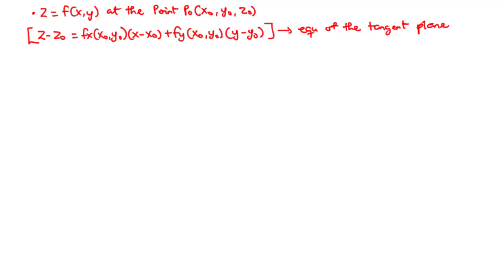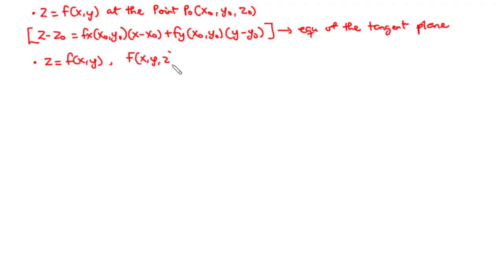Now in this lesson, we are going to look at a more generalized form of this same equation. Considering the same surface given by z equals f of xy, this time we want to represent this function in the form capital F of x, y, z equals c, where c is a constant. To do so, we are basically going to transpose z to the right-hand side of the equation.